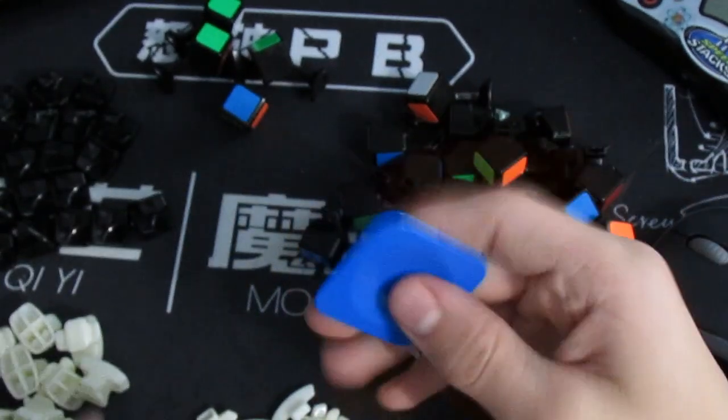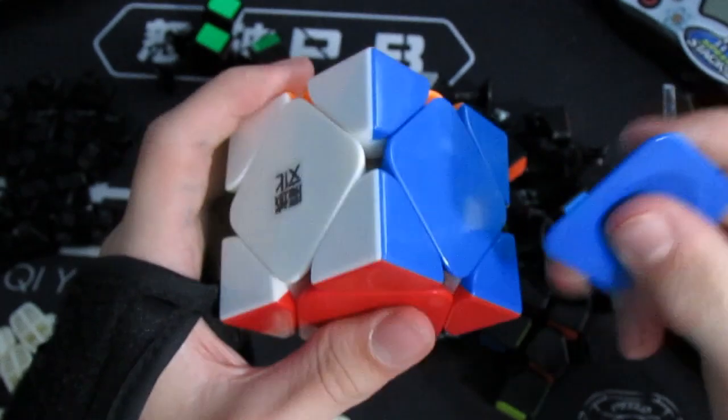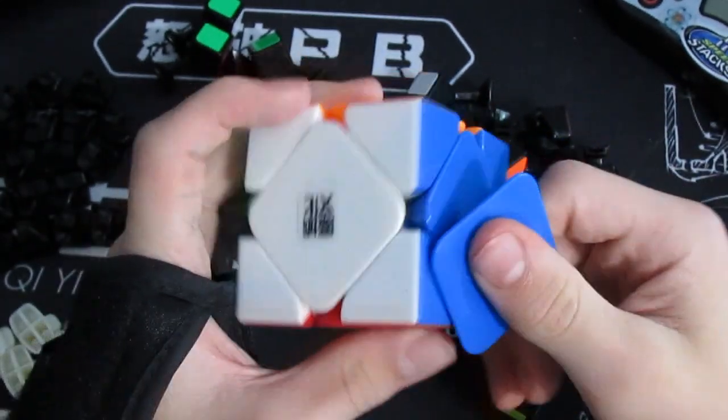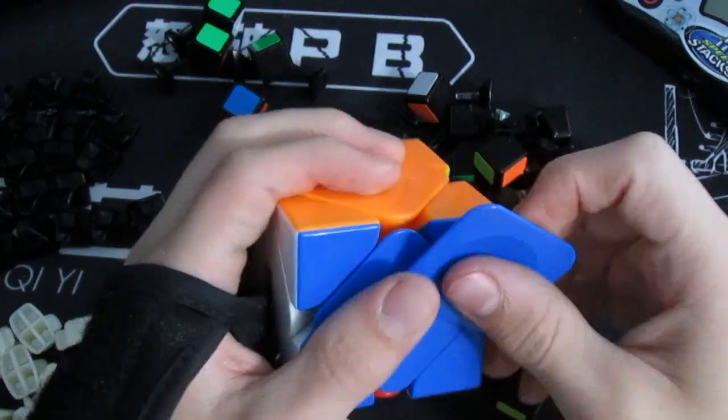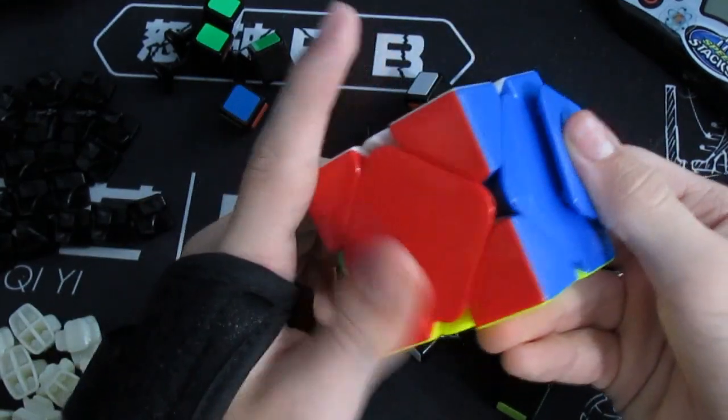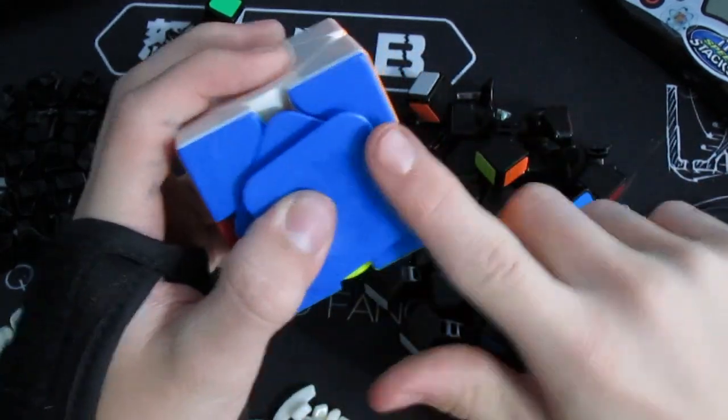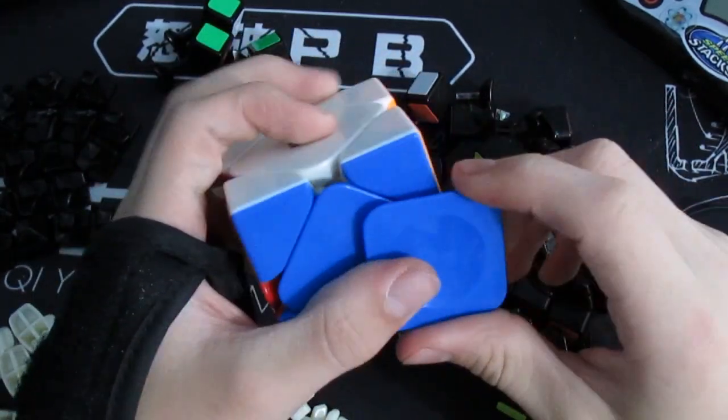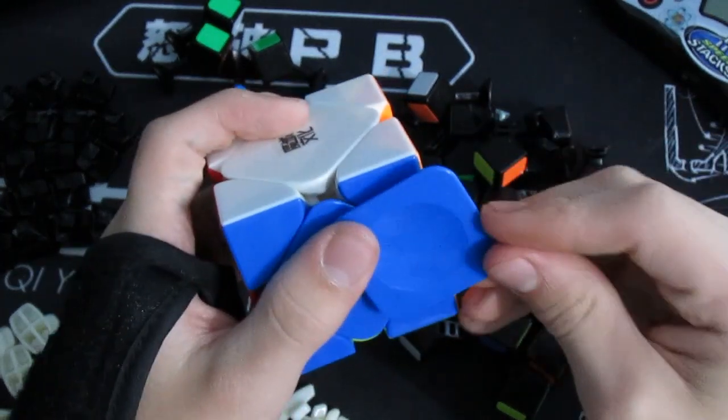My problem with these is that once you put them on they just feel so wrong on a cube because it's so circular. You put your thumb in there but for normal finger tricks you need it to be all concave or not concave at all. I don't like this kind of half and half thing.